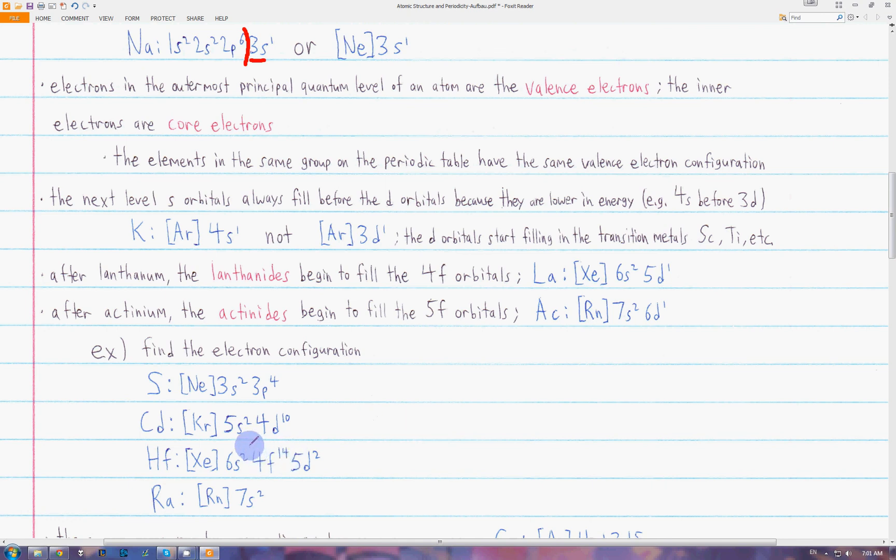Instead of writing 5d1 here for lanthanum, and then going to the f and back to the d, we just write the 4f14 and then the 5d2 at the end.